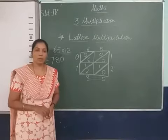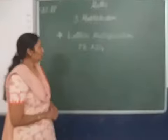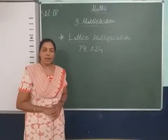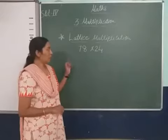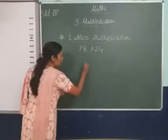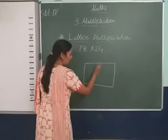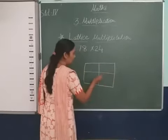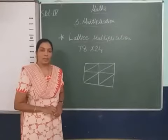Now let me take one more example. Students, the next example for this method is 78 multiplied by 24. Again I draw here the lattice for you. First draw the square, then 4 squares. Now the diagonal we will draw.